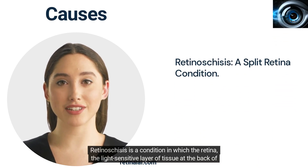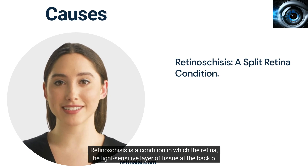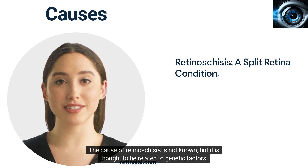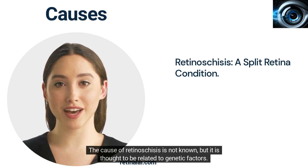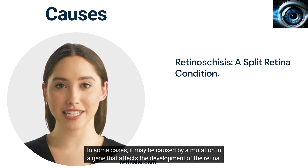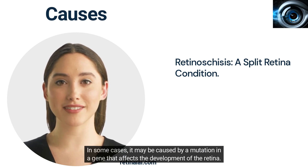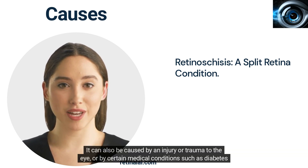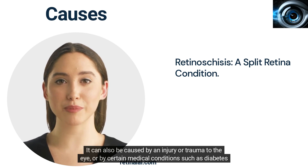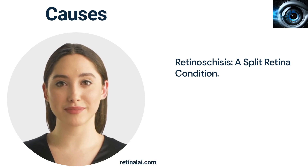Retinosteces is a condition in which the retina, the light-sensitive layer of tissue at the back of the eye, splits into two layers. The cause of Retinosteces is not known, but it is thought to be related to genetic factors. In some cases, it may be caused by a mutation in a gene that affects the development of the retina. It can also be caused by an injury or trauma to the eye, or by certain medical conditions such as diabetes or high blood pressure.